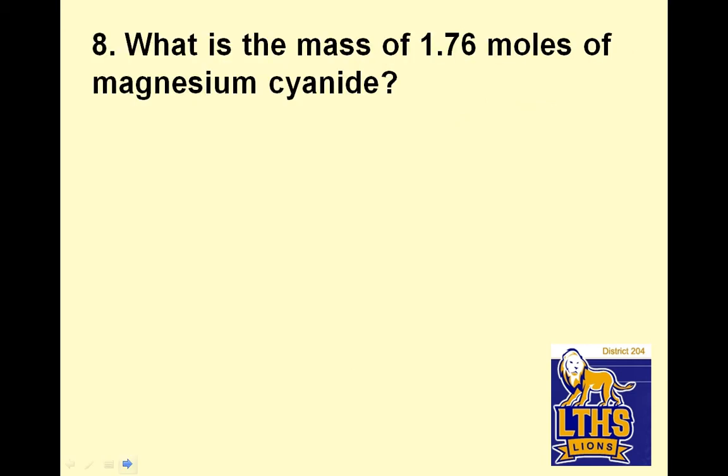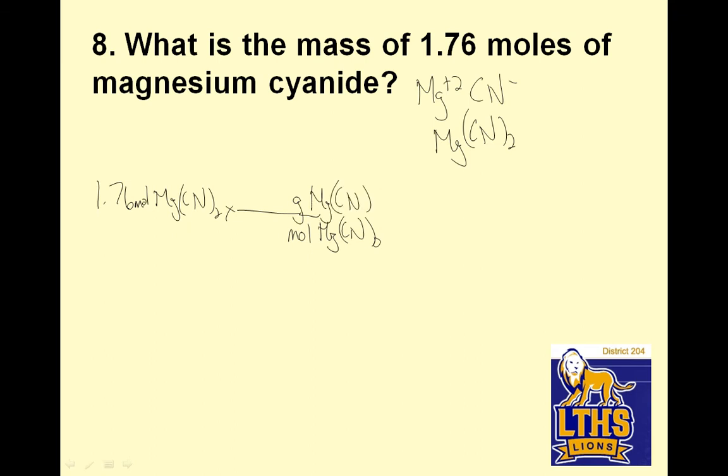What is the mass of 1.76 moles of magnesium cyanide? Well, first you need to know what magnesium cyanide is. Magnesium is plus 2, cyanide is minus 1, so canceling the charges, Mg(CN)2. So if I have 1.76 moles of magnesium cyanide, then what I want to do is get out of moles of magnesium cyanide and go into grams of magnesium cyanide.